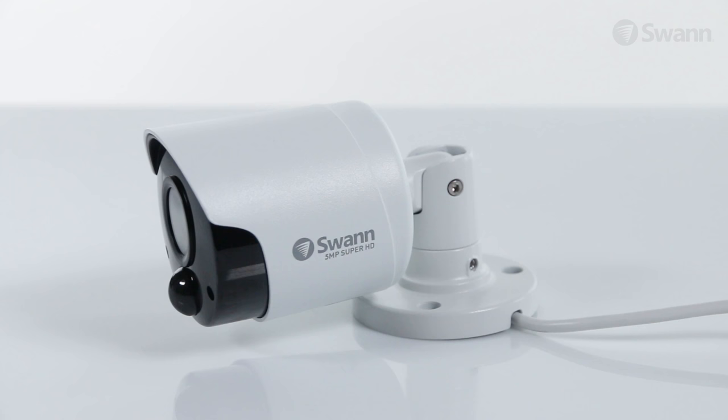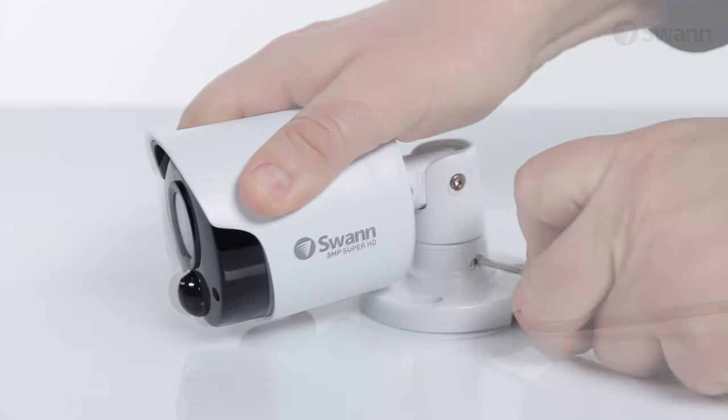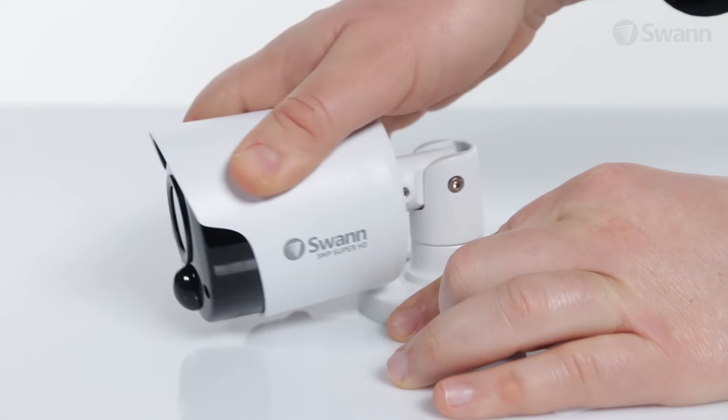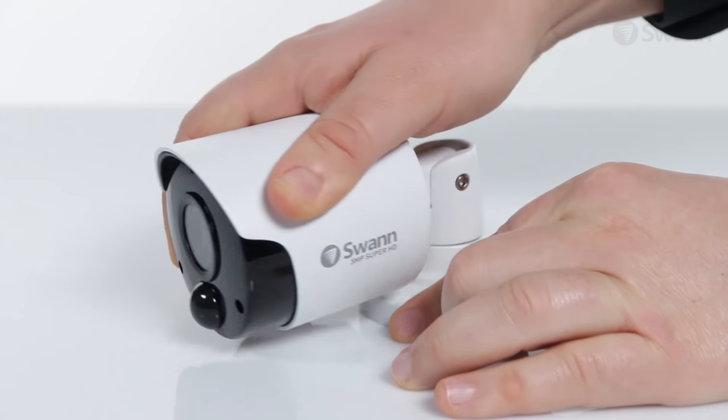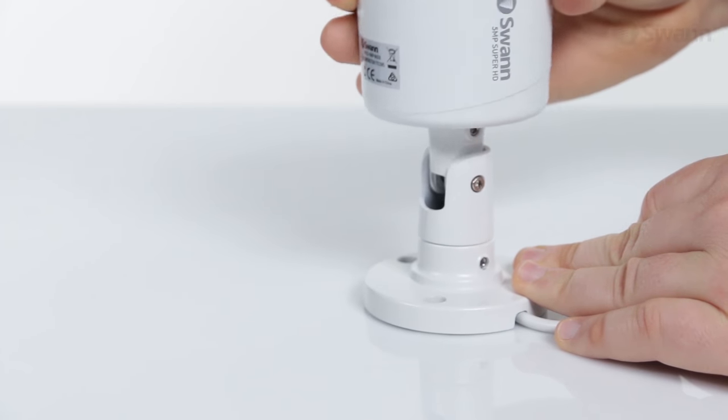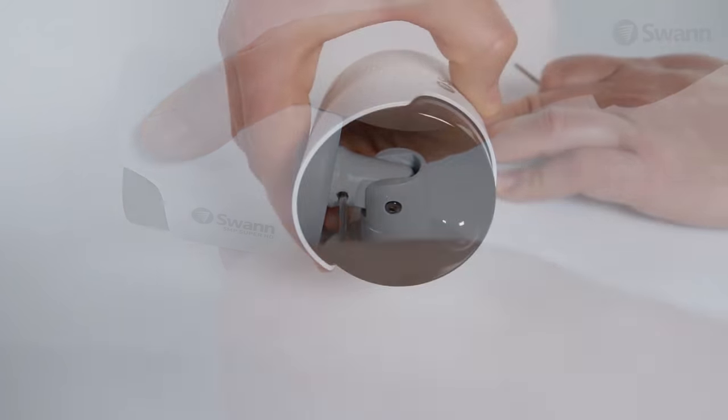Your bullet camera has three points of articulation. Use a Phillips-head screwdriver or Allen key to loosen the bolts. This point enables left or right rotation. The next point enables up or down movement. This point enables camera rotation.